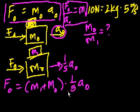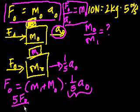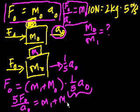And so if we divide both sides by this term right here, we get dividing by 1 fifth is the same thing as multiplying by 5. So you get 5f sub 0 over a sub 0 is equal to m1 plus m0. Right? I just divided both sides by this term right here.